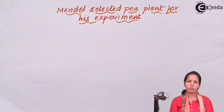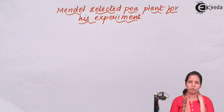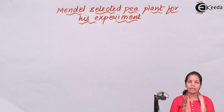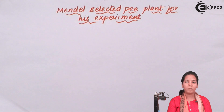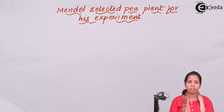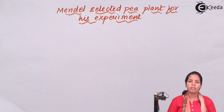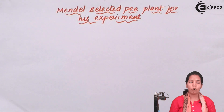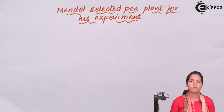Why did Mendel choose Pisum sativum for his experiment? The words we study today — hybrid, allele, genetics, homozygous, heterozygous — were all coined by Mendel, even before the advent of the microscope and PCR. Isn't that great?